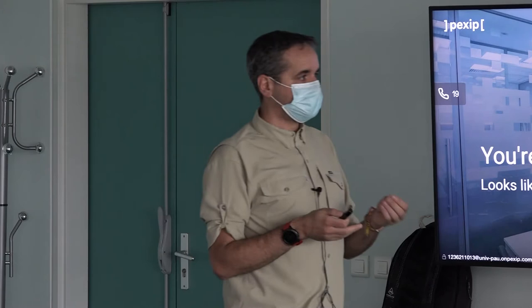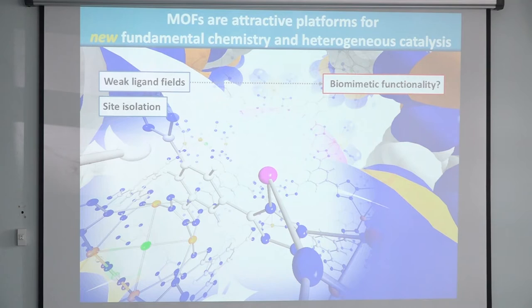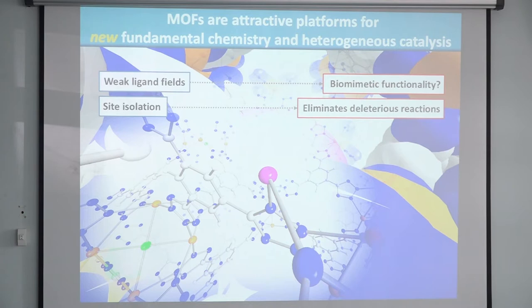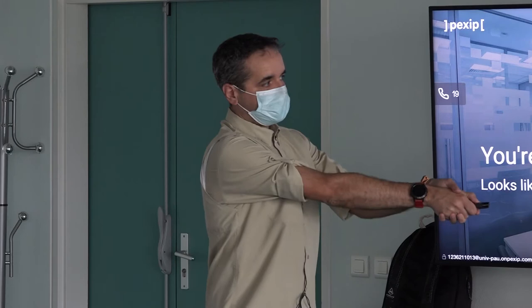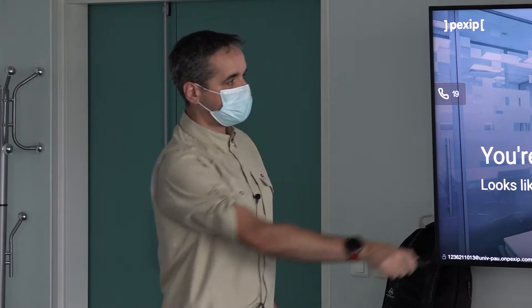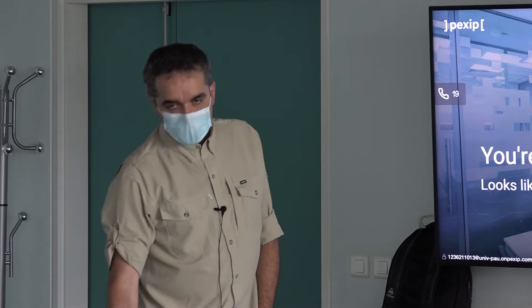Site isolation: enzymes are the ultimate site-isolated catalysts because the active site of an enzyme never sees another active site by definition. In MOFs, the metal here is 10 angstroms away from the next metal, so they never meet each other — eliminating many problems of homogeneous catalysts. Additionally, this metal literally has four open coordination sites, which is very hard to achieve with homogeneous catalysis without building very bulky, sterically crowded ligands.